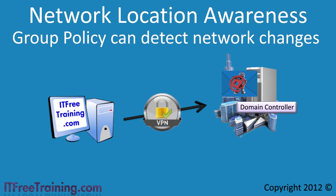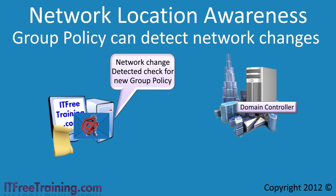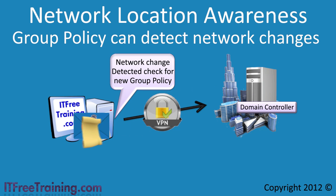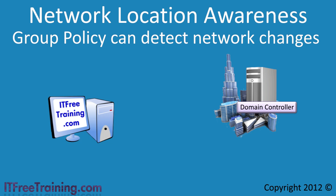With Windows Server 2008, group policy now integrates with the network location awareness service. This means that when changes in network state are detected, group policy is notified of this change. When the VPN connection is established, group policy will be informed and will download any new group policies from the network. The network location awareness service detects any network changes, including the computer coming out of hibernation, a network cable being plugged in, or a wireless network becoming available. This helps ensure that group policy settings are sent out to all clients as soon as possible.